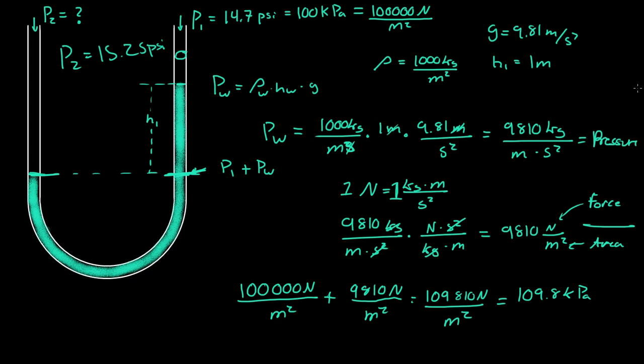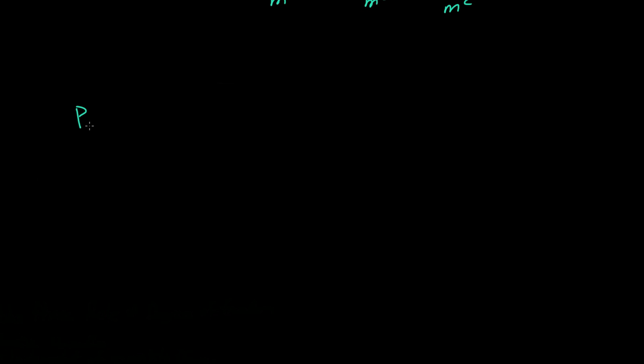So what did we really learn? We learned that P2, or the pressure on one side of the manometer, is equal to P1 plus the density of the fluid times the height of the fluid times the gravitational constant.